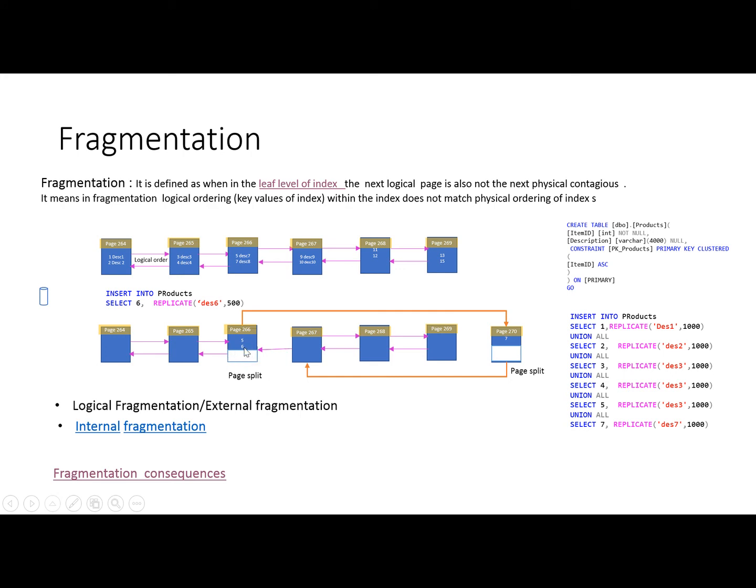Now after this 266, the next physical page is 267, but 266 is pointing out now to 270 which is the next logical page. So the logical page and physical page orders are mismatching. This mismatching is known as fragmentation, and when this fragmentation is happening, if there is more fragmentation, then our index retrieval process will be slow.